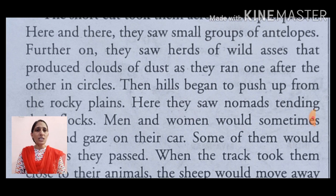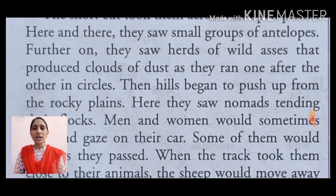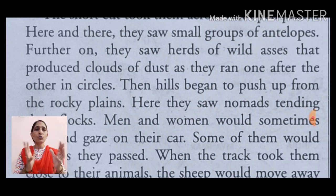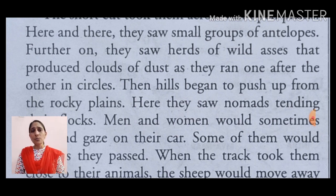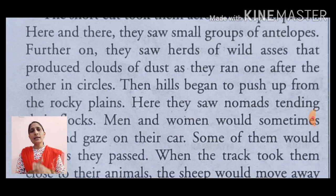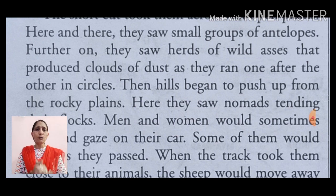Further on, there were herds of wild asses — आगे बढ़ने पर उन्होंने देखा कि झुंड थे जंगली गधों के, that produced clouds of dust — जो कि धूल के बादल उड़ा रहे थे, as they ran one after the other in circles — जब वो एक-दूसरे के पीछे-पीछे circle बनाकर दौड़ रहे थे, wild asses एक-दूसरे के पीछे घूम रहे थे, जिससे धूल के बादल उड़ रहे थे।